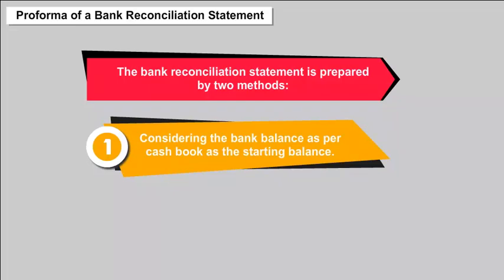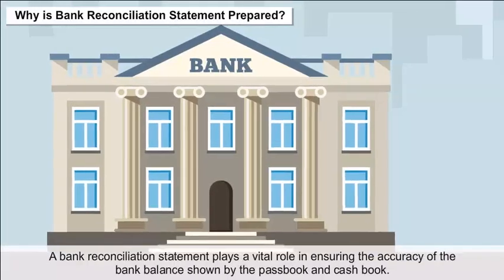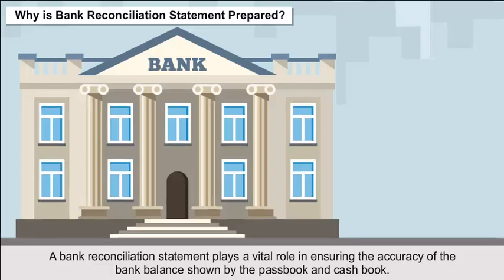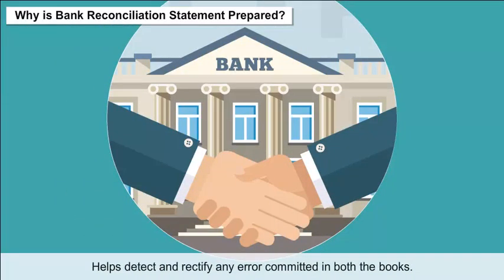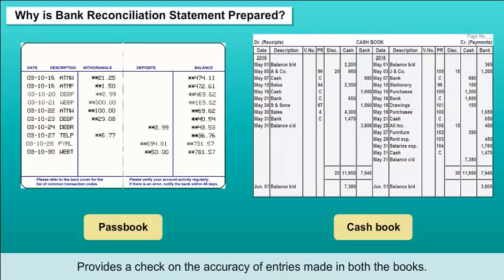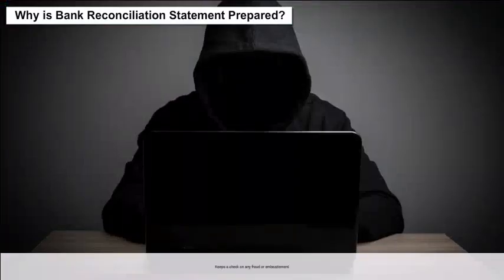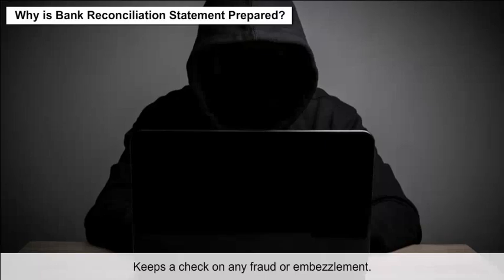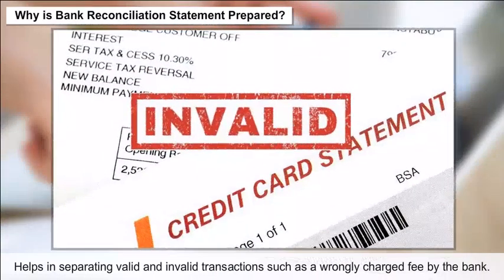Why is a bank reconciliation statement prepared? It plays a vital role in ensuring the accuracy of the bank balance shown by the pass book and cash book. It helps detect and rectify any errors committed in both books, provides a check on the accuracy of entries made in both books, identifies any delay in the collection and clearance of checks, keeps a check on any fraud or embezzlement, and helps in separating valid and invalid transactions such as wrongly charged bank fees.